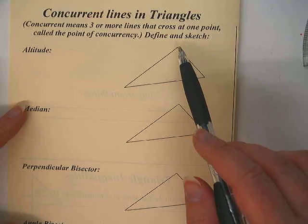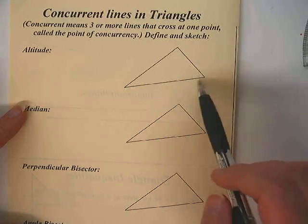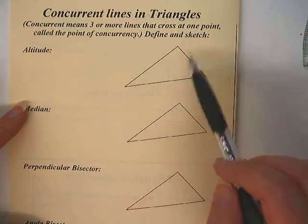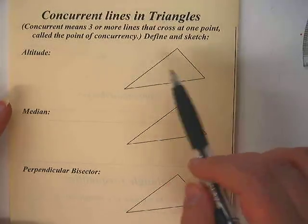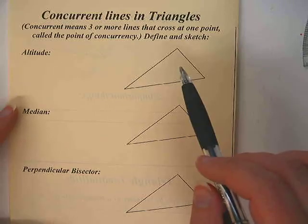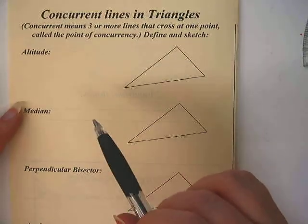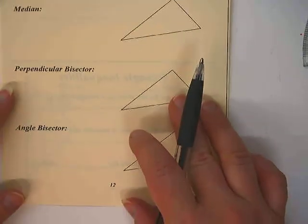In each of these triangles, we can put three of each of these types of lines, and if we do them correctly, they should all line up at a point, somewhere inside, on, or outside of the triangle, depending on which one it is.